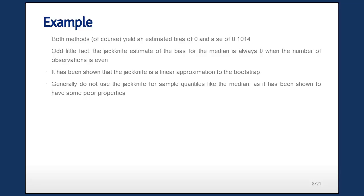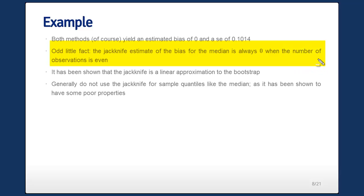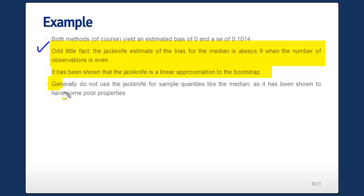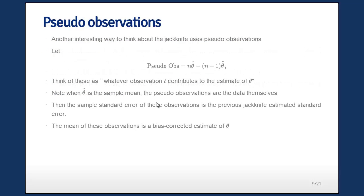However, there's an odd little fact: the jackknife estimate of bias for the median is always zero when the number of observations is even, even though the median isn't unbiased then. So we need something better, and that's where the bootstrap comes in. It's been shown that the jackknife is a linear approximation of the bootstrap. In general, don't use the jackknife for sample quantiles like the median — it's been shown to have some poor properties. But otherwise, the jackknife is a nice, handy little tool.